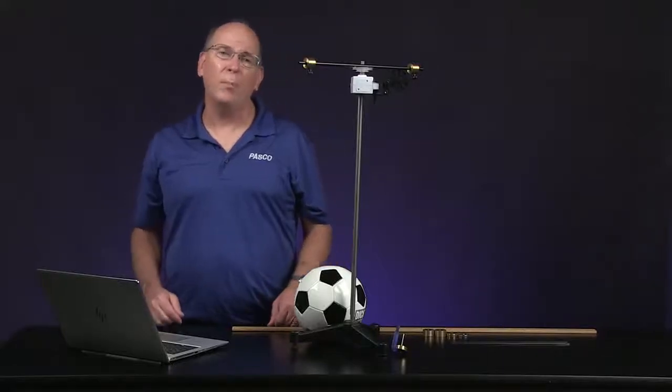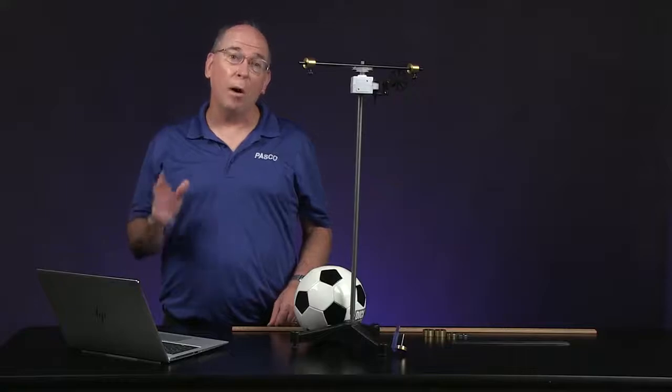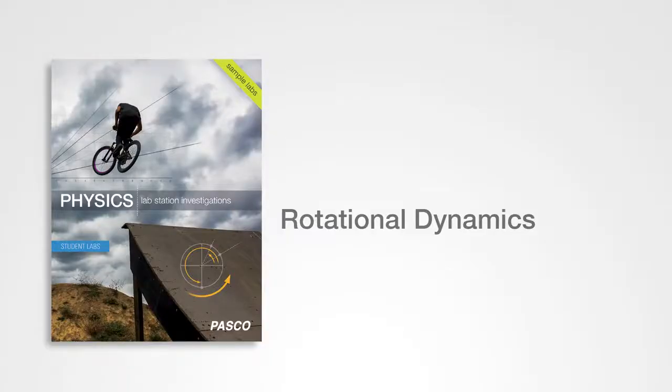How does the rotation of an object depend on the torque applied to it? What causes some things to be harder to rotate than others? This is rotational dynamics.